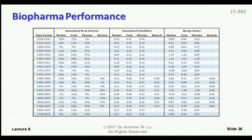Here are the annualized means, volatilities, and Sharpe ratios — the ratio of expected return to standard deviation — for various different five-year periods as well as for longer sample periods. I'm comparing the stock market as a whole, the tech sector, the pharma sector, and biotech.